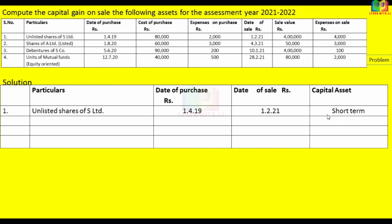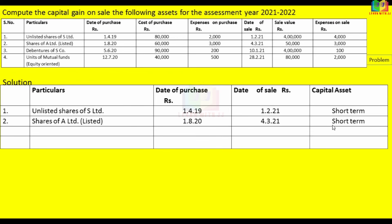For unlisted shares, the holding period is 24 months. For listed shares, it is 12 months. Looking at the date of purchase — 1st August 2018 — and date of sale 4th March 2021, if 24 months are complete by 1st August 2020, and the sale is on 4th March 2021, this is short-term.